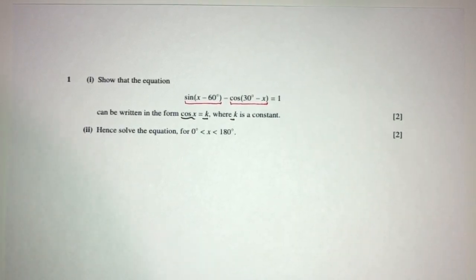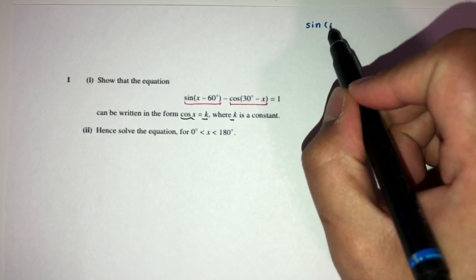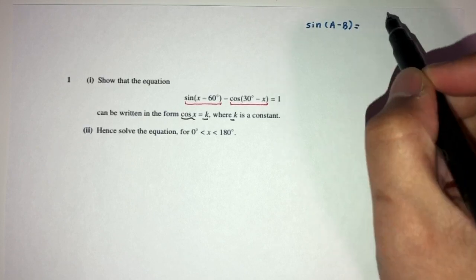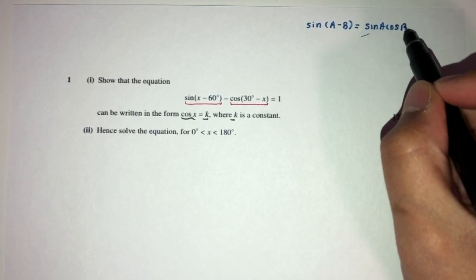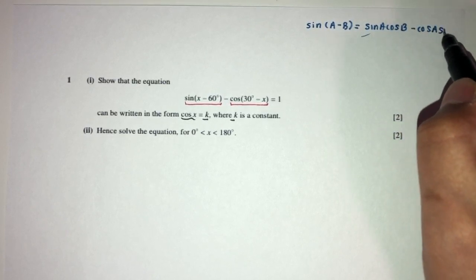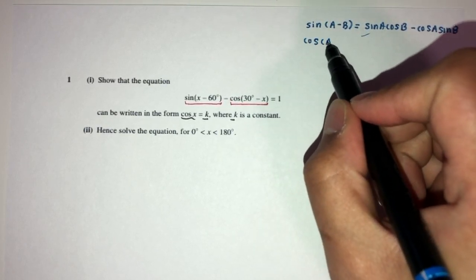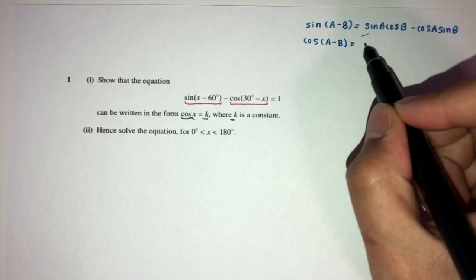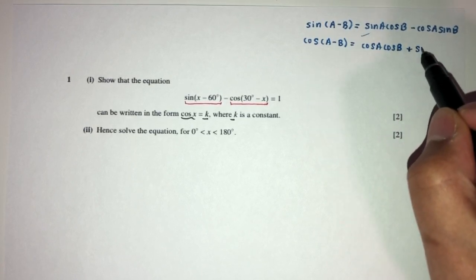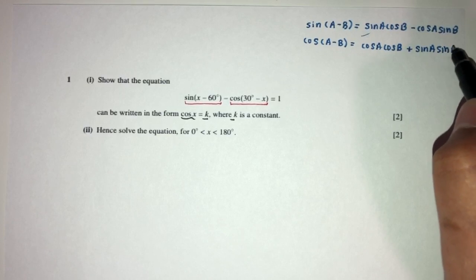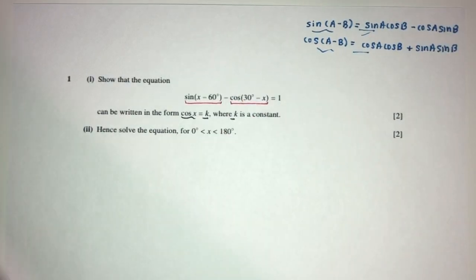We do know the formulas for these compound angles. For example, sine(A − B) = sin A cos B − cos A sin B. And cos(A − B) = cos A cos B + sin A sin B. So now we know how to break these down and we can replace those in our equation.